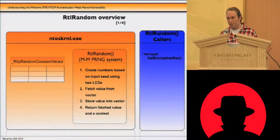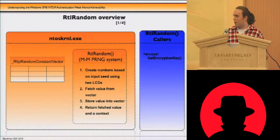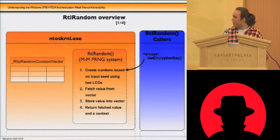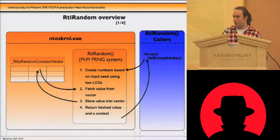I will explain the RTLRandom function in detail. RTLRandom is a PRNG which appears to be a MacLaren-Marsaglia system, which uses two LCGs. First, we create numbers using two LCGs as an MNM system, then we fetch a value from an internal vector — which is related to the MNM system — and store a value into that vector.